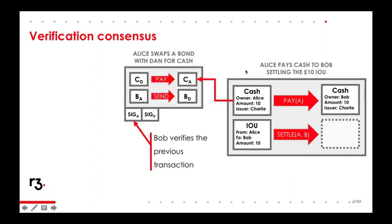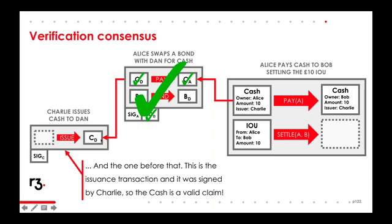When Alice proposes and signs this transaction and sends it to Bob, Bob takes the input state reference for the cash state and goes to Alice asking for the transaction that contains that cash output state. Alice responds with the transaction — it turns out to be a transaction between Alice and Dan where Alice swapped a bond for some cash. So the cash Alice holds originally came from Dan. Bob then verifies this transaction and takes the input state reference for the cash to obtain the previous transaction, which was the issuance transaction where Charlie issued the cash to Dan. Bob then verifies this transaction and checks Charlie's signature.